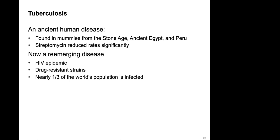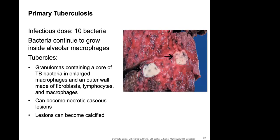Tuberculosis is a very old disease — evidence has been found in mummies from the Stone Age, ancient Egypt, and Peru. Streptomycin reduced the rate significantly, but we do see drug-resistant strains and a re-emerging disease. The HIV epidemic has led to an increase in TB infections. Nearly one-third of the world's population is infected with TB, making it arguably the most infectious human disease on the planet prior to COVID.